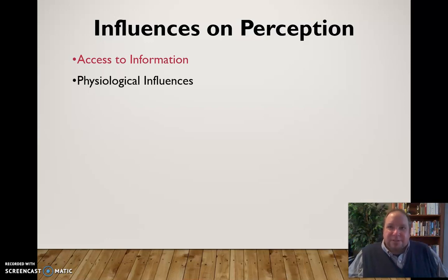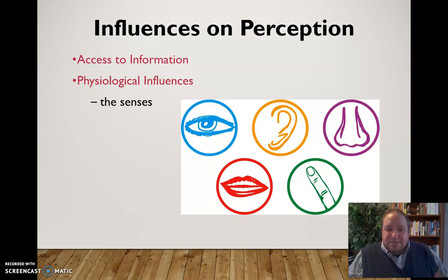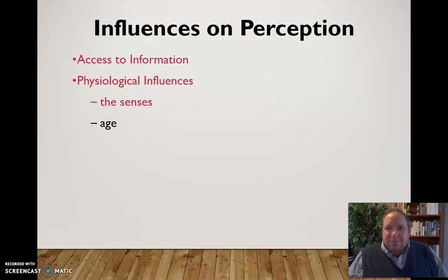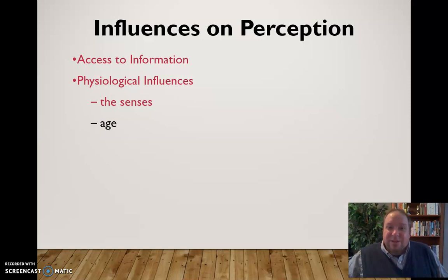Our physiological influences — things like our senses and what they tell us — also affect perception. Each of us has heightened senses in different areas; some have a better sense of smell or a better sense of hearing, and how that impacts our perception of things. Our age will also affect our perception. I find that as I get older, music often seems too loud — that never would have been the case when I was younger. Our values change as we grow older, and that affects our perception of things.